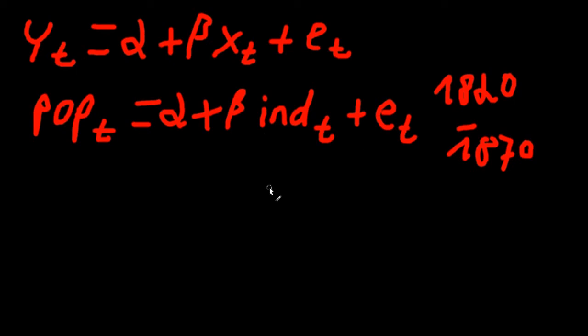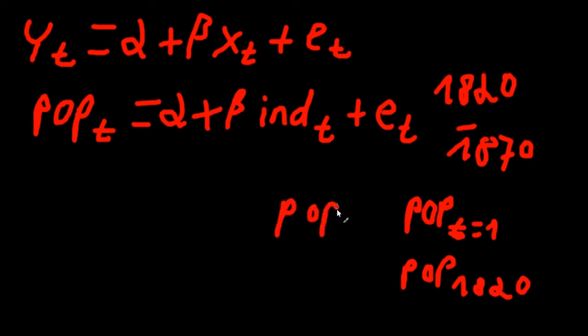Now, remember that this time we don't have single units as observations, but every year from 1820 to 1870. So the population at time t equals one would be the population in the year 1820. Just as the population at time t equals five would be the population in 1825.